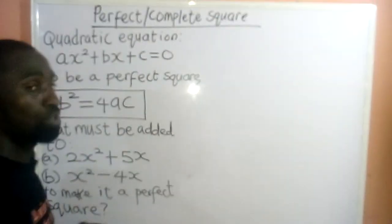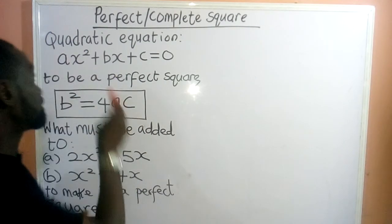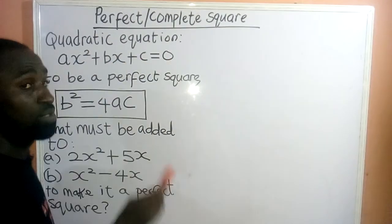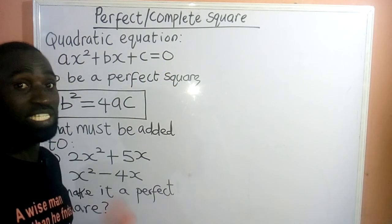A quadratic equation, what is the general form of a quadratic equation? It is given as ax² + bx + c = 0. Class, this is the general form of a quadratic equation.